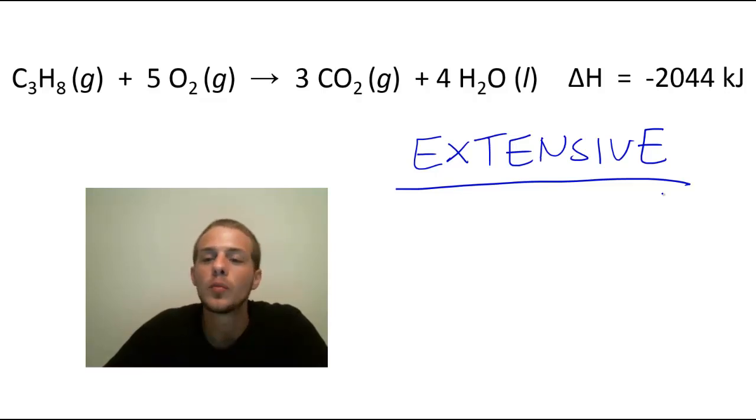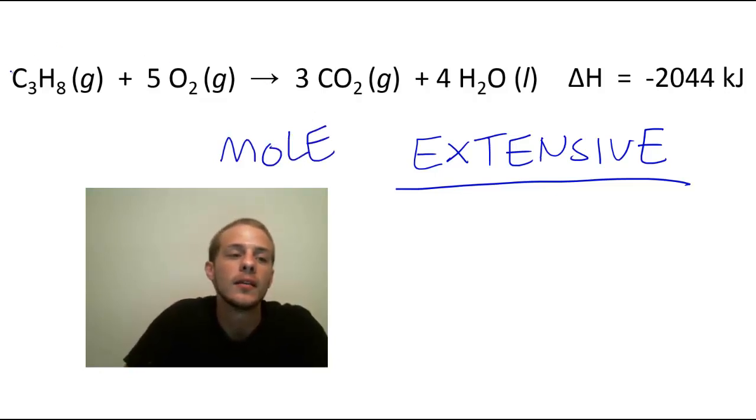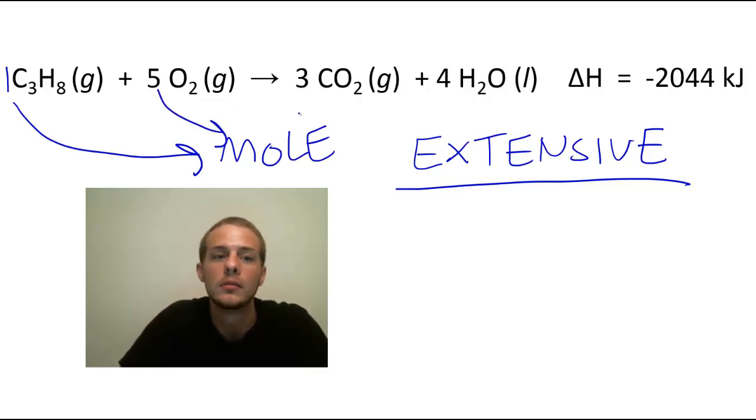And this is pretty easy as long as we recognize that this value is reported such that the reaction is occurring as written on a molar basis. So in other words, what I'm trying to say is that if we have one mole of propane reacting with five moles of oxygen to make three moles of CO2 and four moles of water, then we are going to get 2,044 kilojoules released into the surroundings during this process. So we can use that delta H value along with the coefficients for the balanced chemical equation to convert back and forth between moles of any of these reactants or products and the amount of heat that's going to be given off.